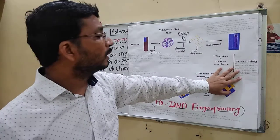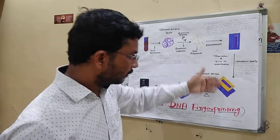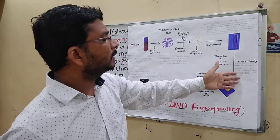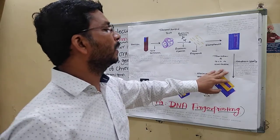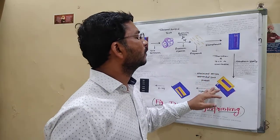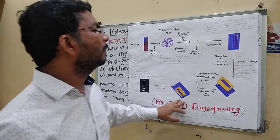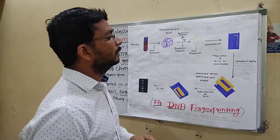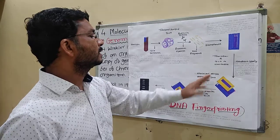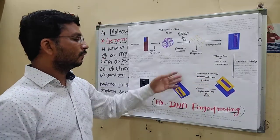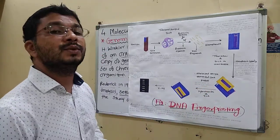Then comes Southern blotting — transfer of DNA to a membrane. The separated DNA fragments are transferred to a nylon membrane or nitrocellulose filter paper by placing it over the gel and soaking overnight. The selected single-stranded DNA probe is labeled with radioactive isotopes.